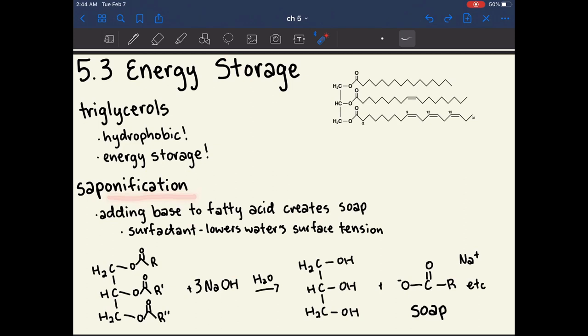Saponification is the process of creating soap from a fatty acid. So let's say you have a triglycerol, and you added some base to it. This would then get you your glycerol back, and here your fatty acid chain is now a soap. By soap, I mean a surfactant.